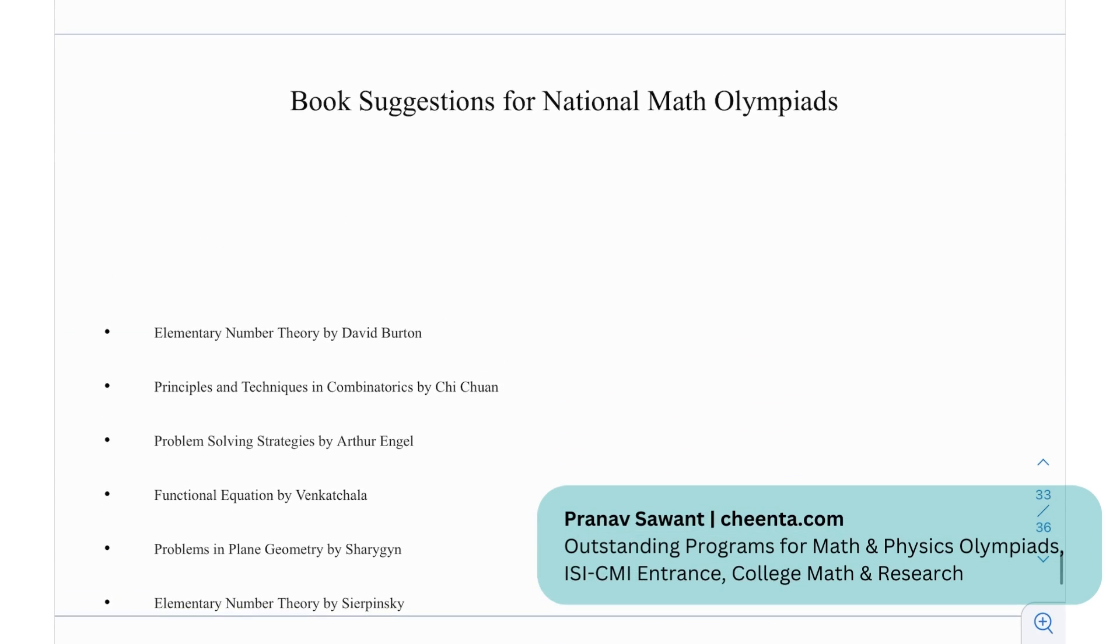So we have certain book suggestions for National Math Olympiads. We have Elementary Number Theory by David Burton, Principles and Techniques in Combinatorics, Problem Solving Strategies by Arthur Engel, Functional Equations by Venkata Challa, Problems in Plane Geometry by Sharygin, and Elementary Number Theory by Sierpinski.